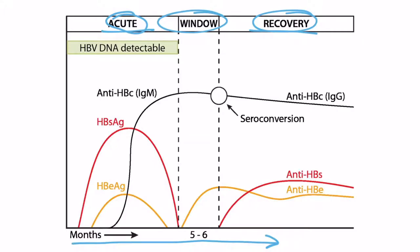Going back to the acute phase, notice that there is DNA detectable. Starting from time zero, the first thing we see is the surface antigen, then the E antigen, then antibodies against the core — and these are IgM. After about five to six months, the surface antigen and the E antigen are no longer detectable. At this point we have entered the window period, which lasts about a month. Antibodies against the E antigen can be present at this point, but they are often undetectable, so they may not be high enough to be detected.